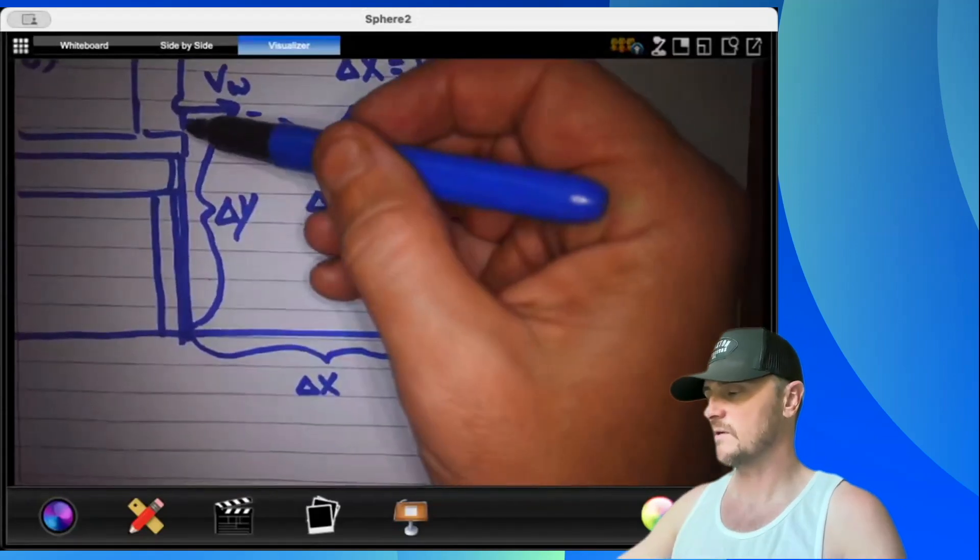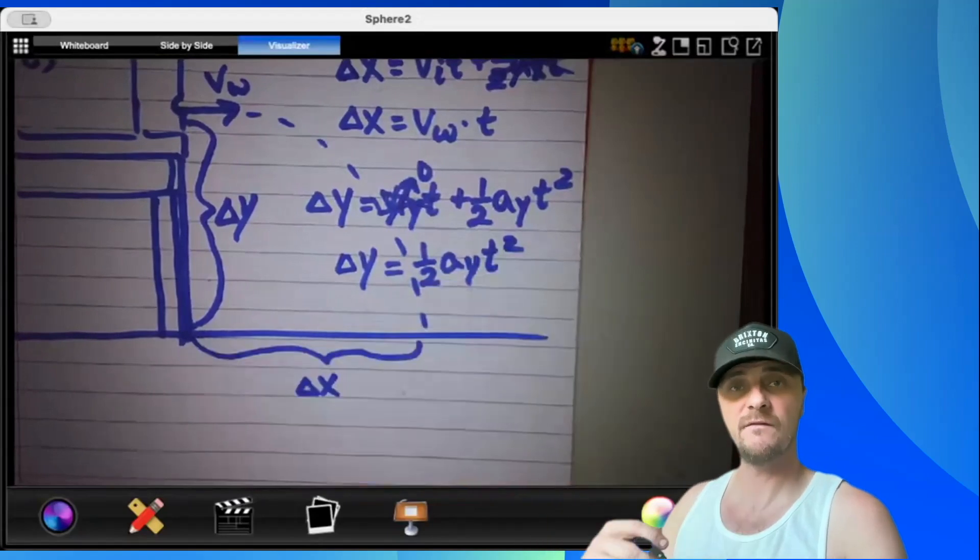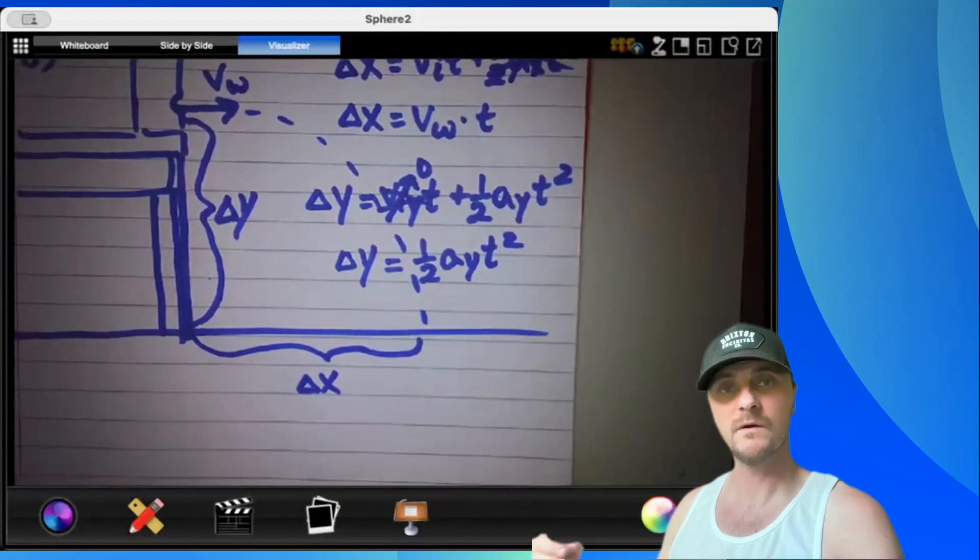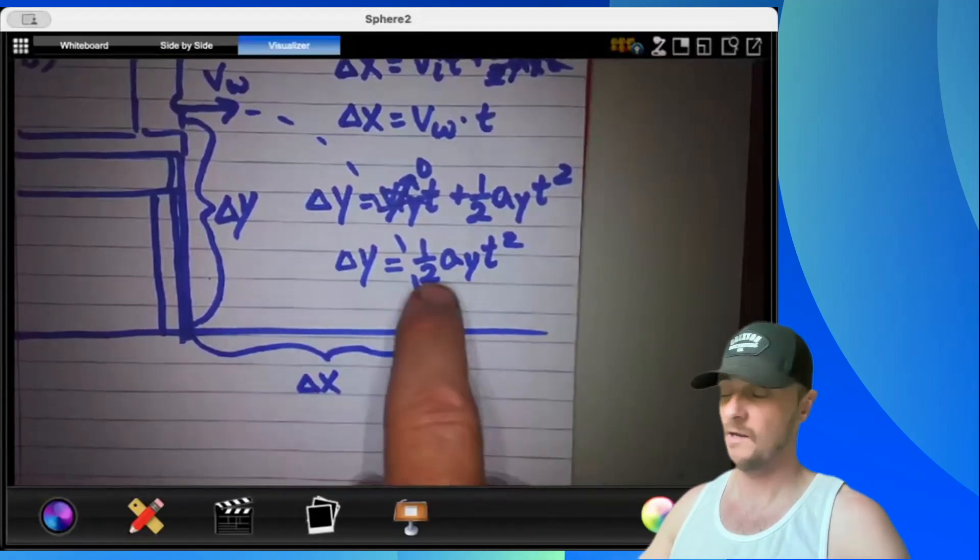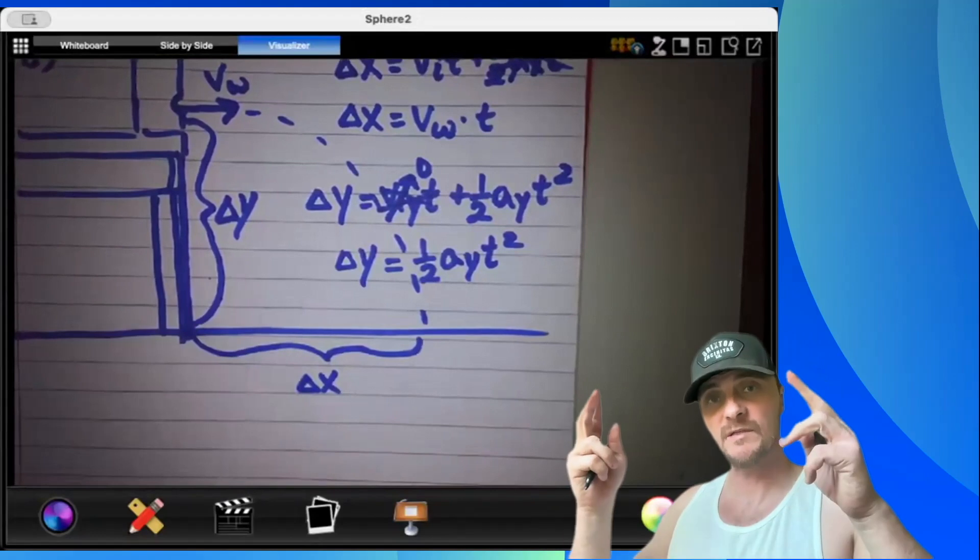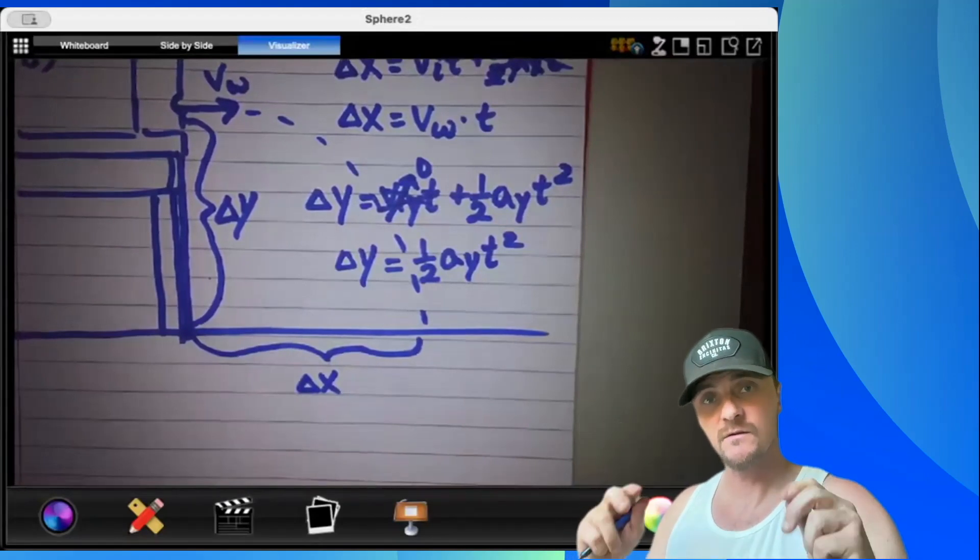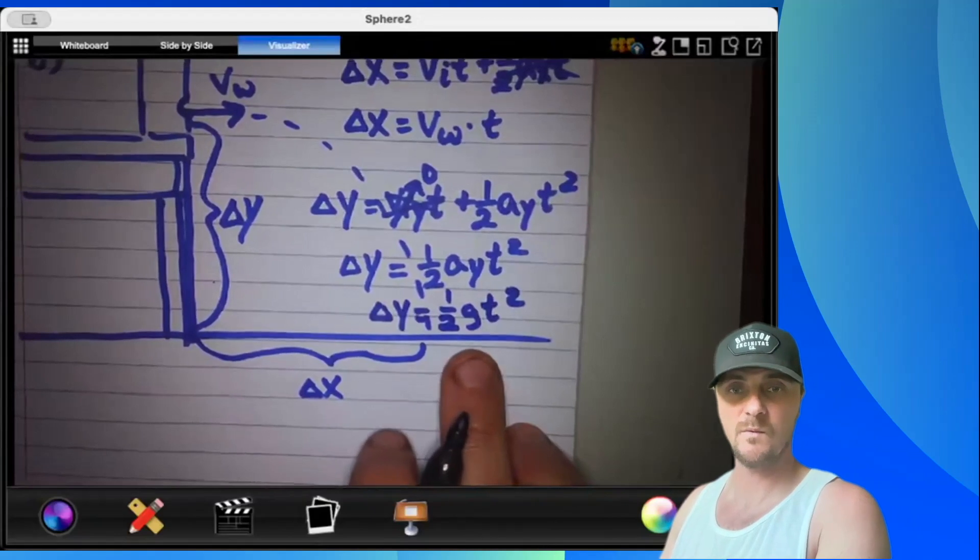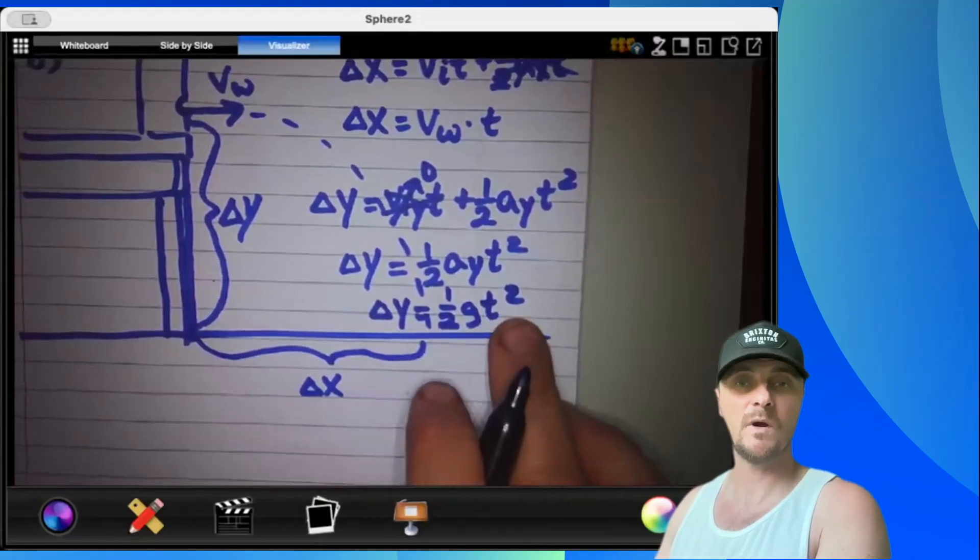So we're going to call initial velocity in the Y axis zero, which makes this entire term zero. Delta Y equals one half A Y T squared. Remember delta Y is technically a negative value because we're displacing downward, and A Y is negative 9.8 meters per second squared, or negative G. If I put a negative G there and a negative delta Y there, the negatives cancel out. Delta Y equals one half G T squared.